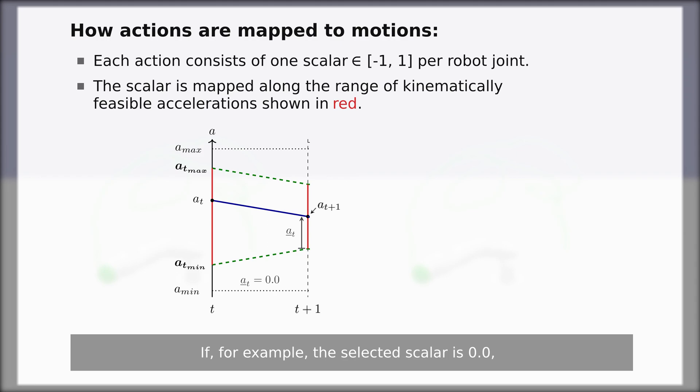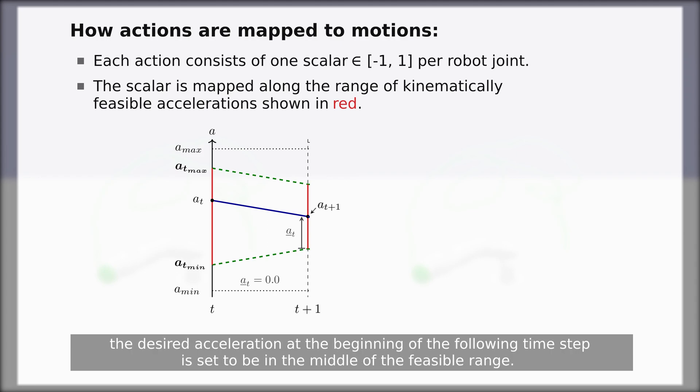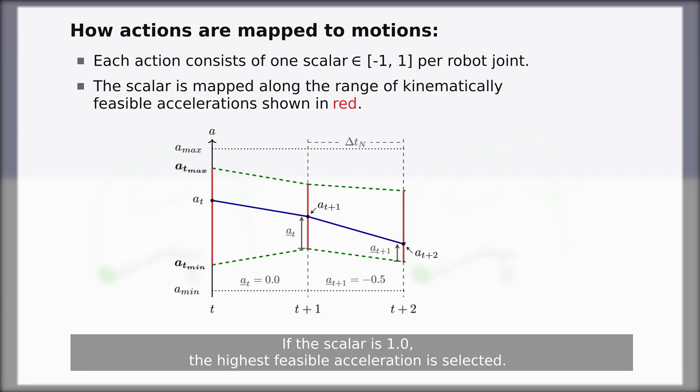If, for example, the selected scalar is 0, the desired acceleration at the beginning of the following time step is set to be in the middle of the feasible range. If the scalar is 1, the highest feasible acceleration is selected.